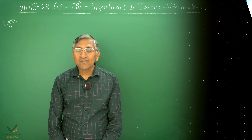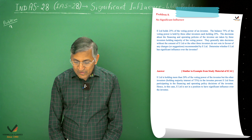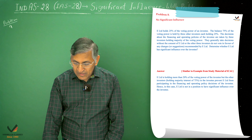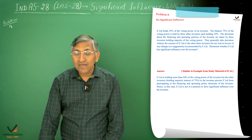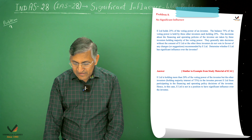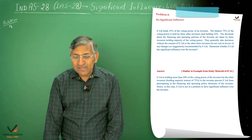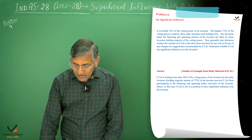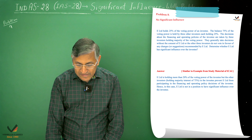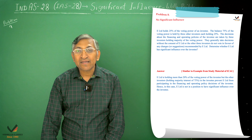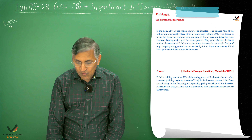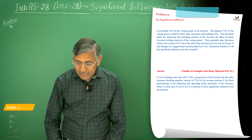In this question, Illimitally holds 25% of the voting power of the investee. The balance 75% of the voting power is held by 3 other investors, each holding 25%. The decisions about the financing and operating policies of the investee are controlled by those 3 investors holding majority of the voting power.